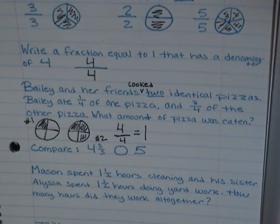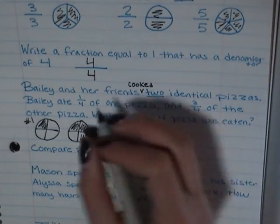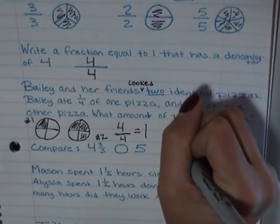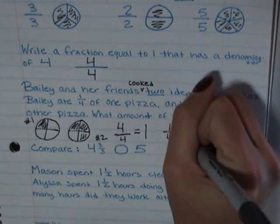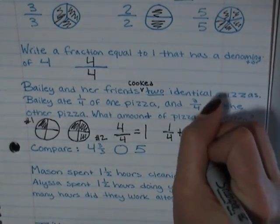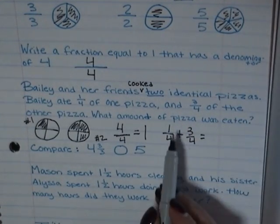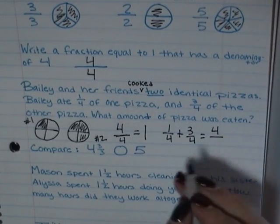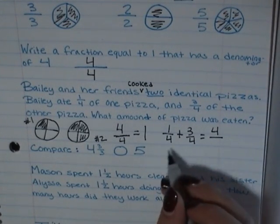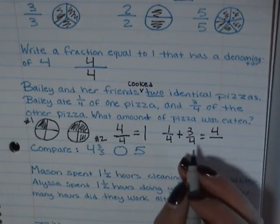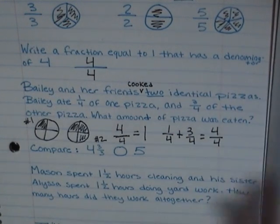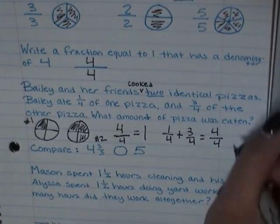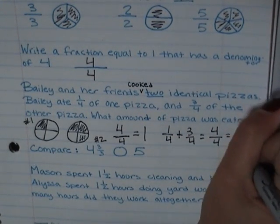Now, the other way that you can do it is take one fourth plus three fourths and then you add the numerators. Three plus one is four. You do not add the denominators because they are out of the same number. And if I have four out of four, I know that that is also equal to one whole.